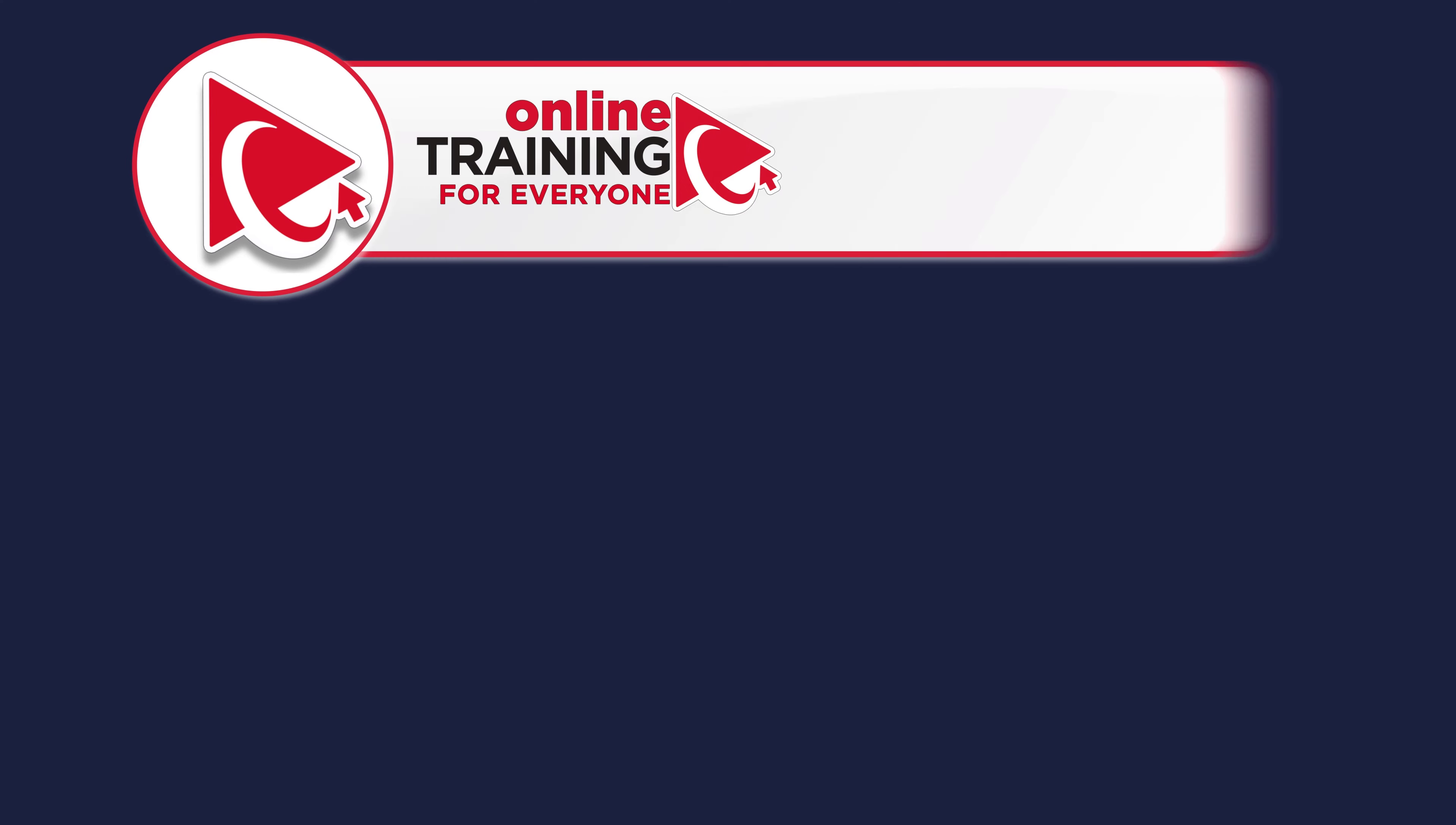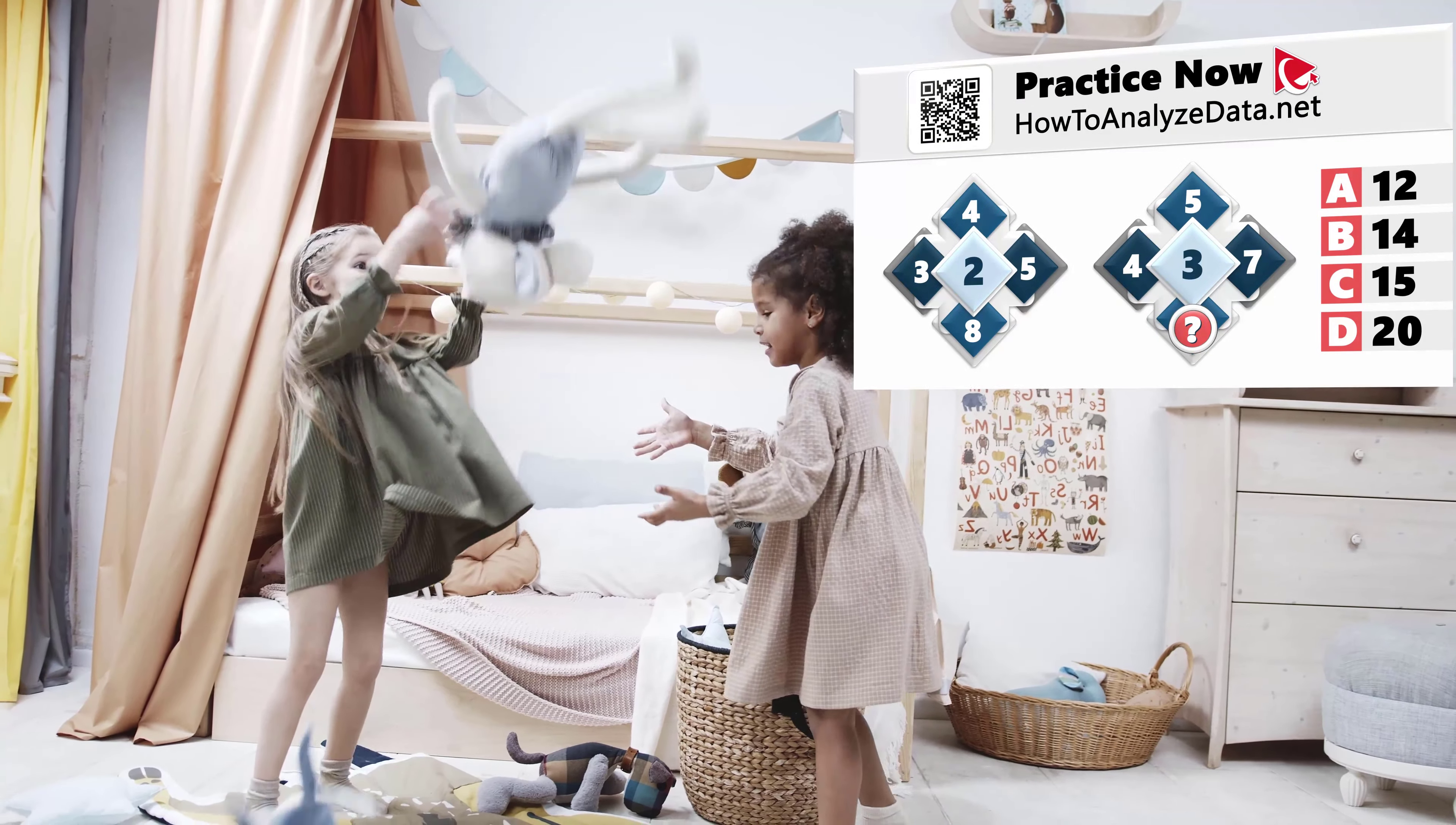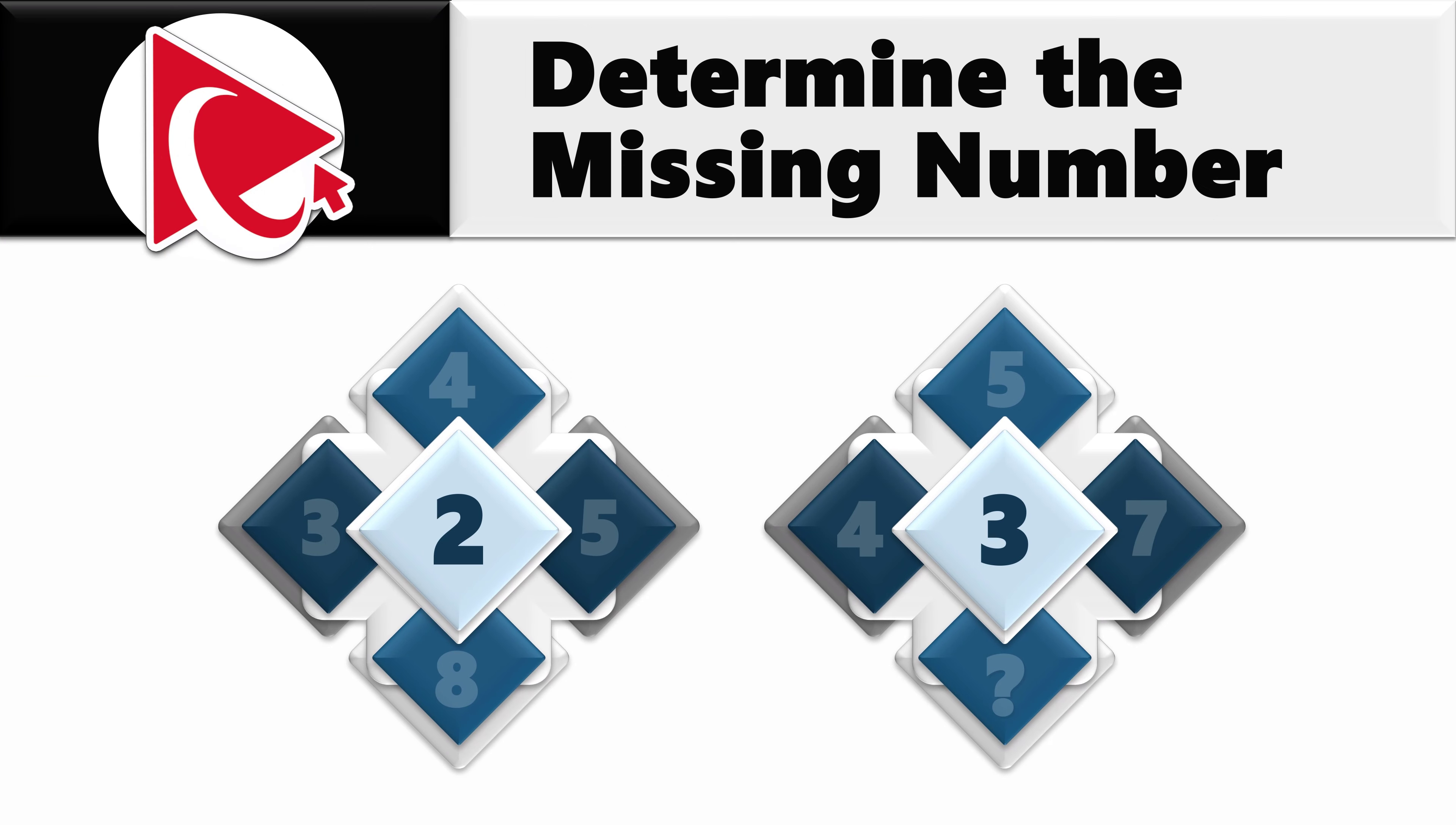Let's face it, untangling this question is like explaining a mess room to a toddler. You might need to use simple terms and point a lot, but eventually it should click. You are presented with two diamonds that have numbers inside. In the first diamond, the middle number is 2. Then starting from the 9 o'clock, the numbers are 3, 4, 5, and 8.